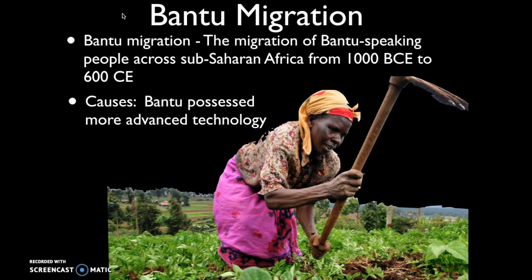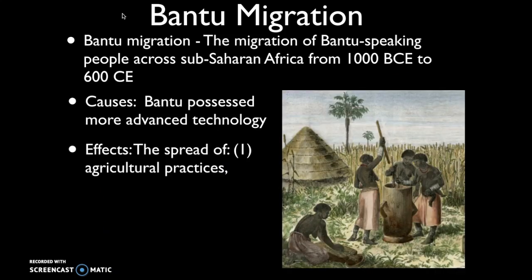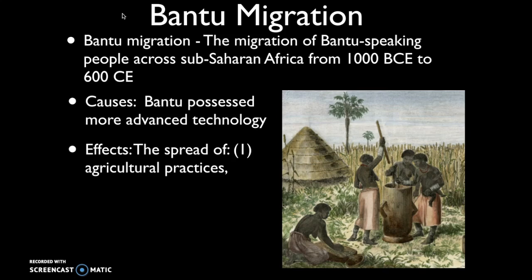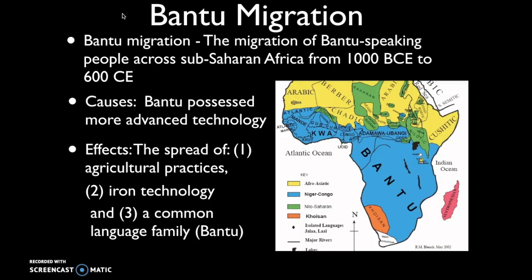The Bantus possessed more advanced technology, which allowed them to spread into sub-Saharan Africa. The effects: because they were a farming society, they were spreading agricultural practices. They were also spreading knowledge of iron-making techniques. And finally, they were spreading this language family — there's now a common language family across sub-Saharan Africa called Bantu. There are hundreds of different dialects of Bantu. When I was in South Africa, I learned one of them — Xhosa. There's Zulu, there's Sotho, and many different languages spoken across sub-Saharan Africa, but they all have a common root in this Bantu family of languages.